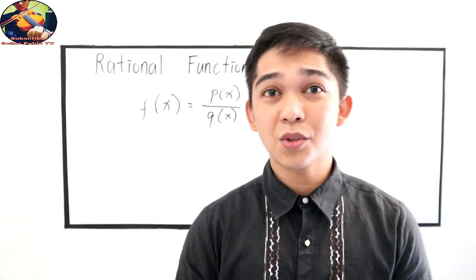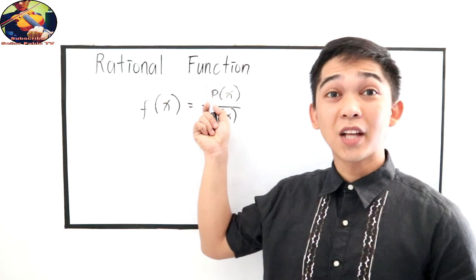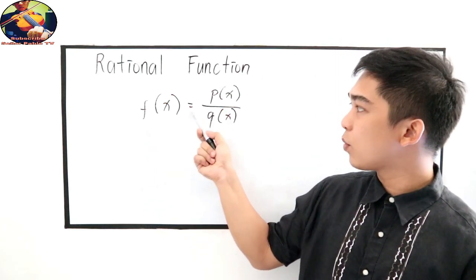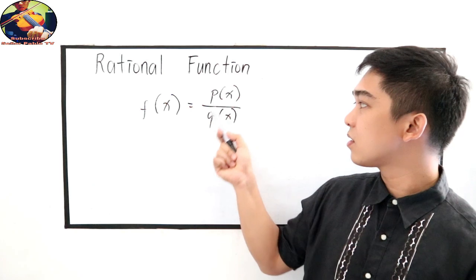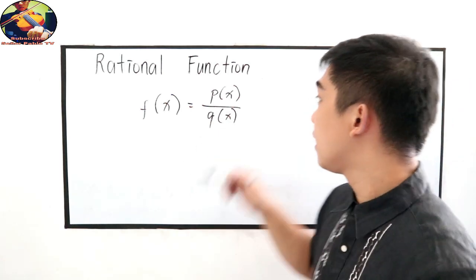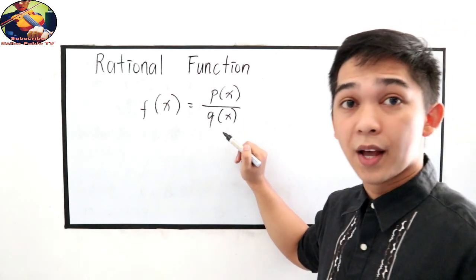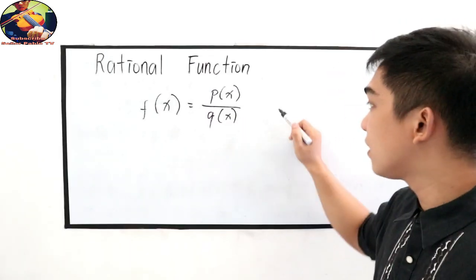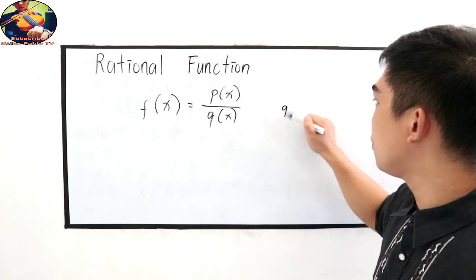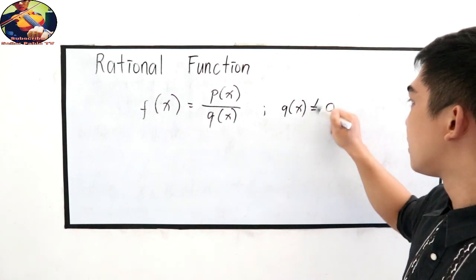In this lesson, you're going to learn what is rational function. A rational function is denoted by f of x is equal to p of x all over q of x, wherein p of x and q of x are polynomials